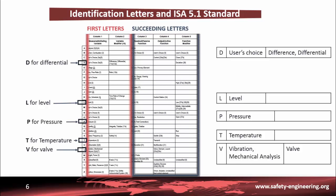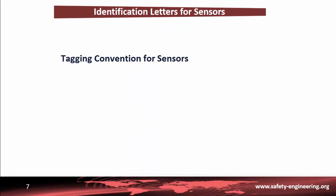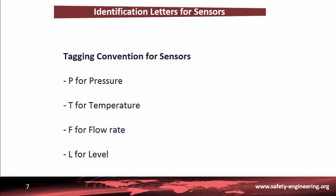Now we are going to present some examples to better understand the tagging conventions for control loops. Firstly, we will explain the tagging convention for sensors. The primary sensors encountered in the chemical industry are pressure (P), temperature (T), flow rate (F), and level (L). These first letters can be associated with other letters, like E, which means the sensor alone — the primary element. The output of the primary element is referred to as the raw signal, and the type of raw signal depends on the kind of sensor.